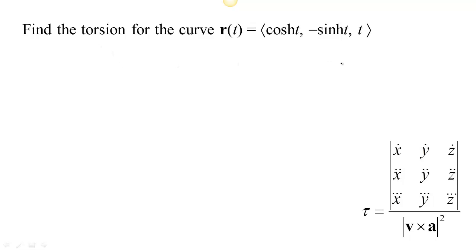So let's see, if that's our position then we can calculate V. The derivative of cosh is sinh and the derivative of -sinh is -cosh, so we get sinh t, -cosh t, and 1.